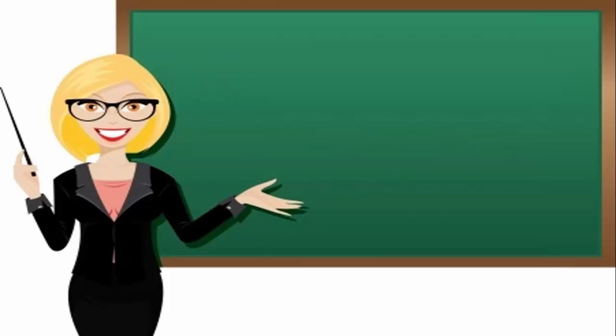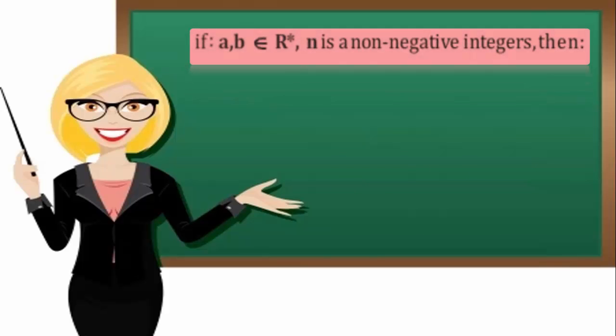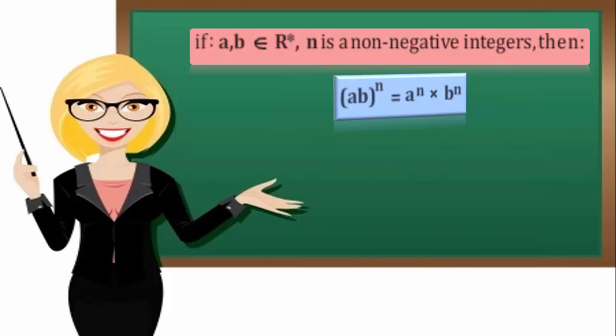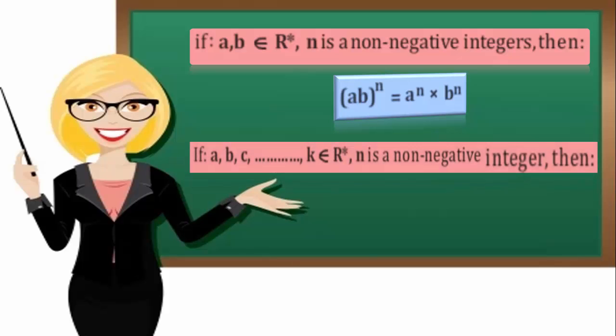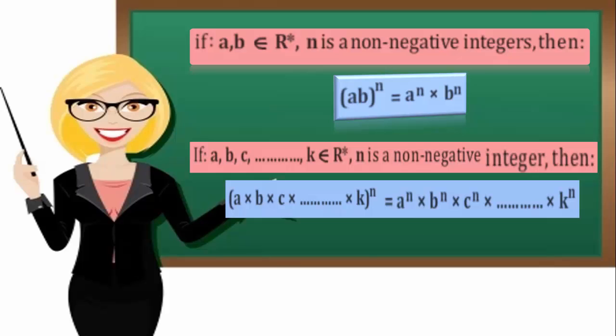Number 3: If A and B belong to R star, and N is a non-negative integer, then A times B all to the power N equals A to the power N times B to the power N. In general, if A, B, C, till K belong to R star, and N is a non-negative integer, then A times B times C times till K all to the power N equals A to the power N times B to the power N times C to the power N, till K to the power N.